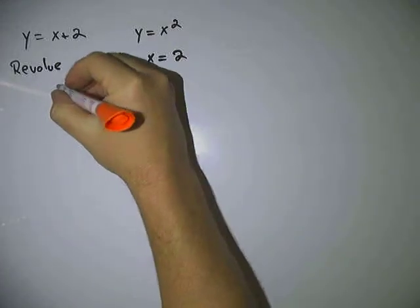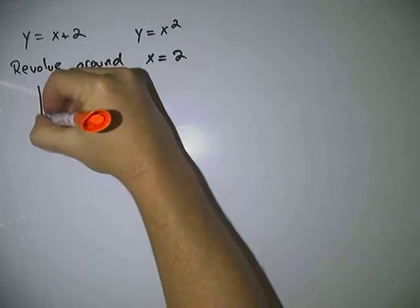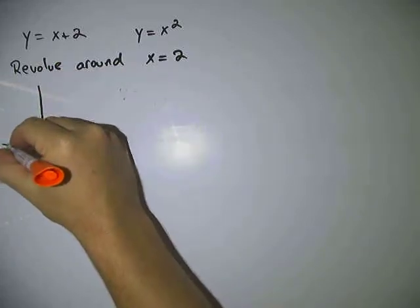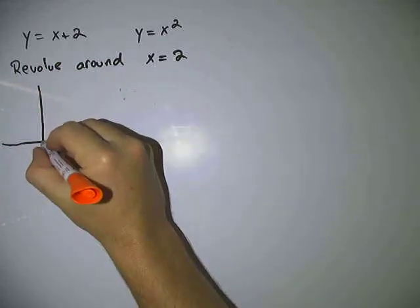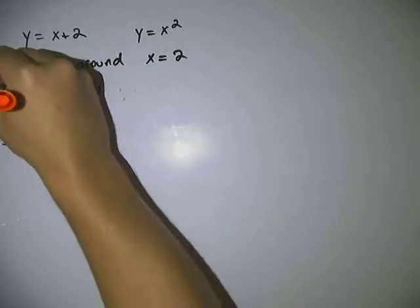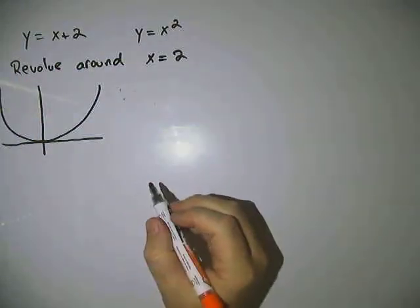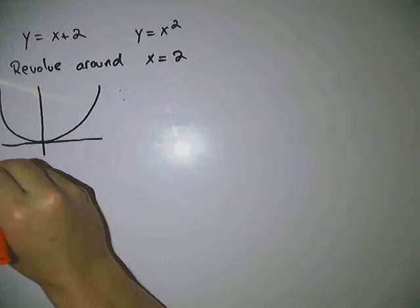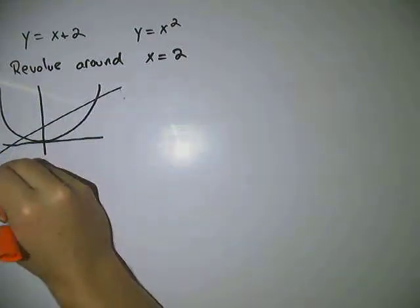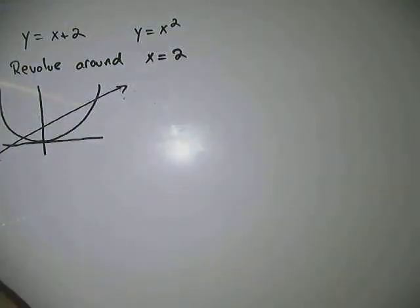So first let's get a basic sketch of these two graphs. You've got your parabola here, and you've got your linear function x plus 2 which basically looks something like this. That doesn't have to be perfect, just gives you the idea there.